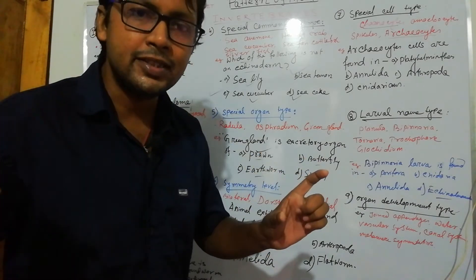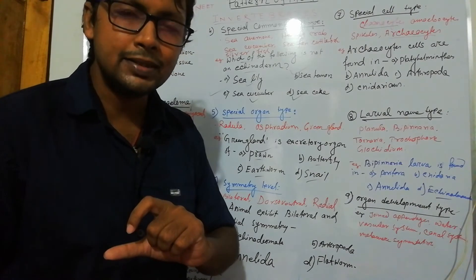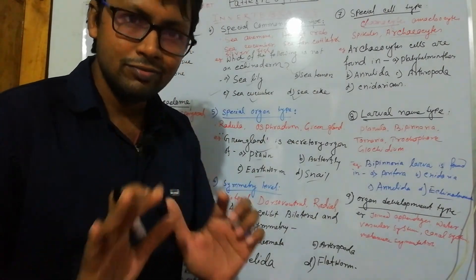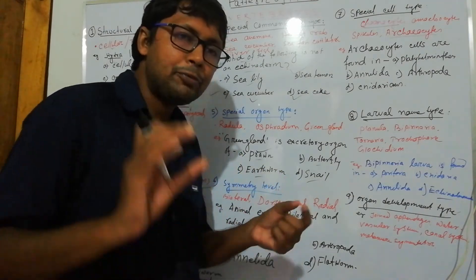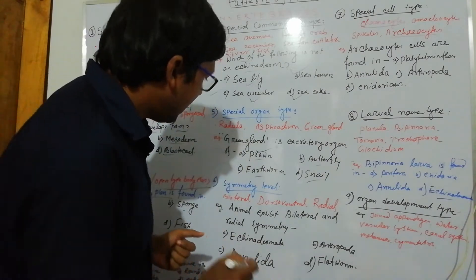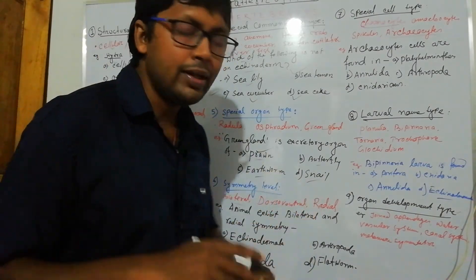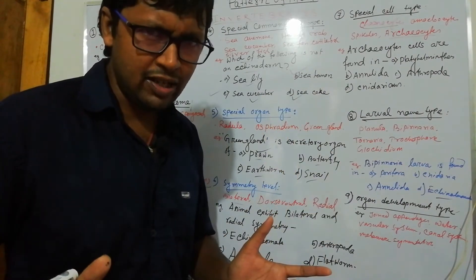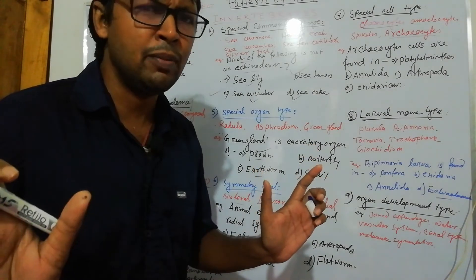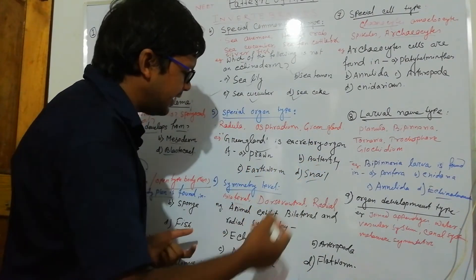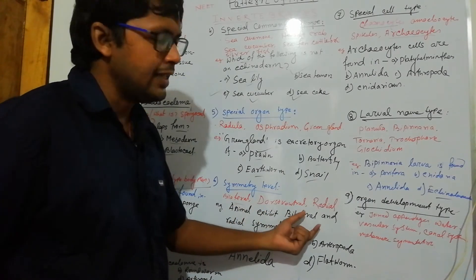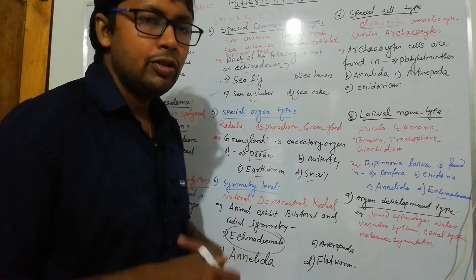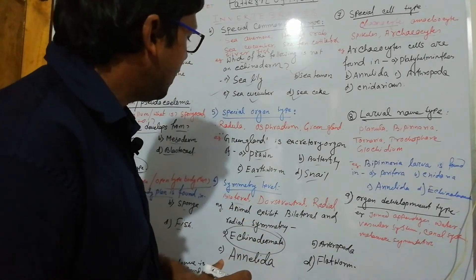Another pattern is RBC pattern: whether RBCs are nucleated, whether only white blood cells are present, whether RBCs are in dissolved condition or in normal form. Form this pattern separately to answer properly. Now, symmetry level: bilateral, dorsal-ventral, radial — what kind of symmetry is present? You must remember all nine phyla's symmetry levels at once. Echinoderms exhibit bilateral symmetry in young stage and radial symmetry in mature stage. Flatworm has dorsal-ventral symmetry.